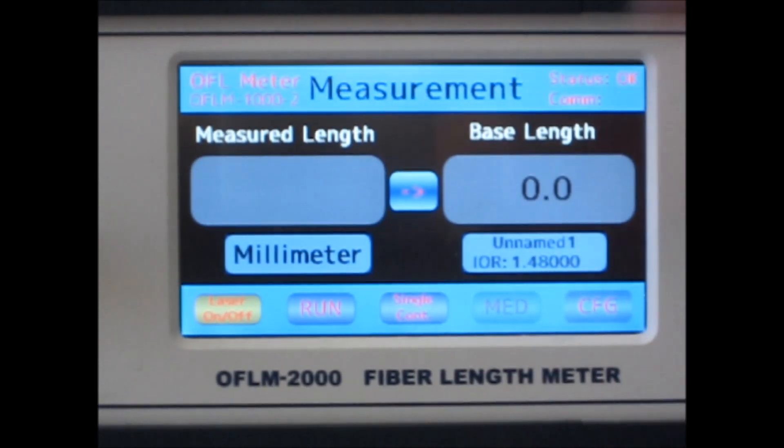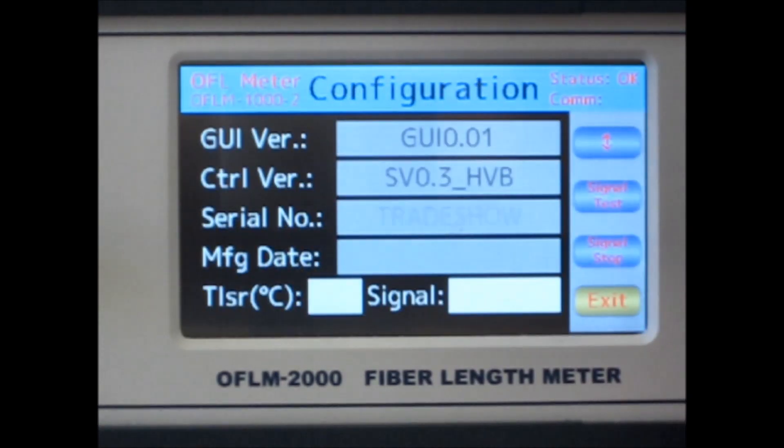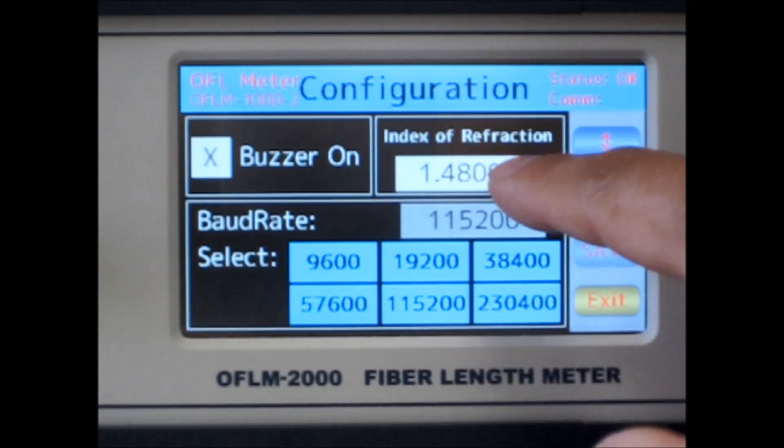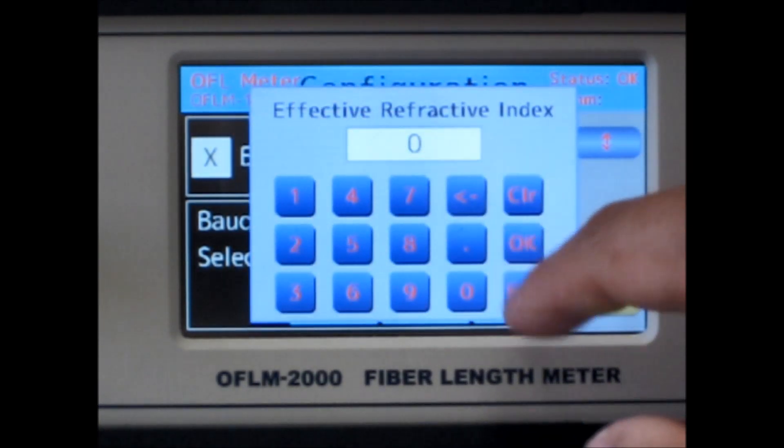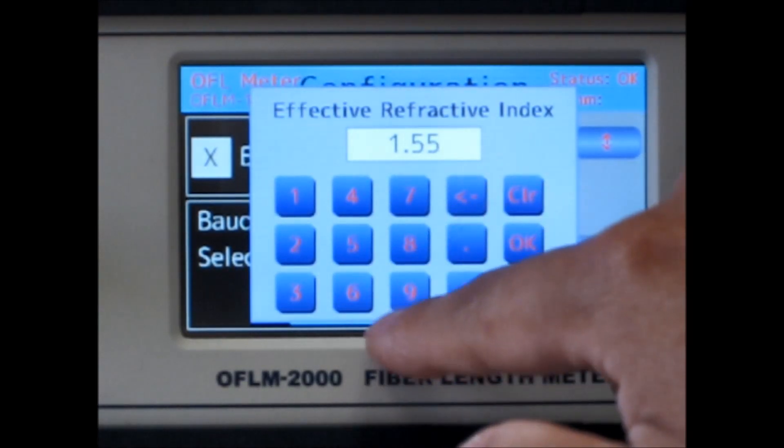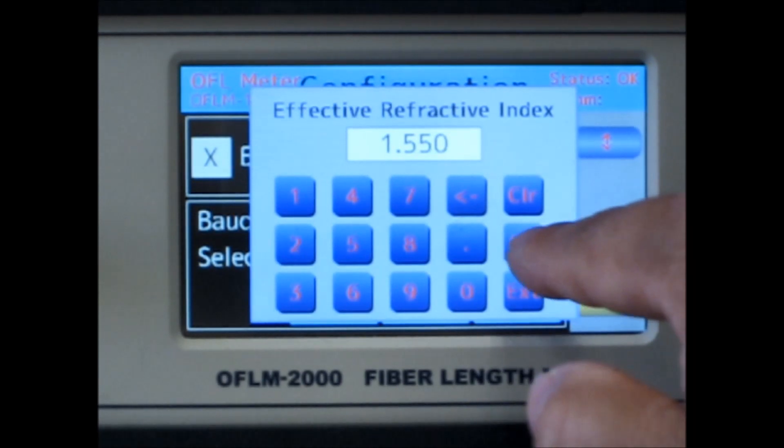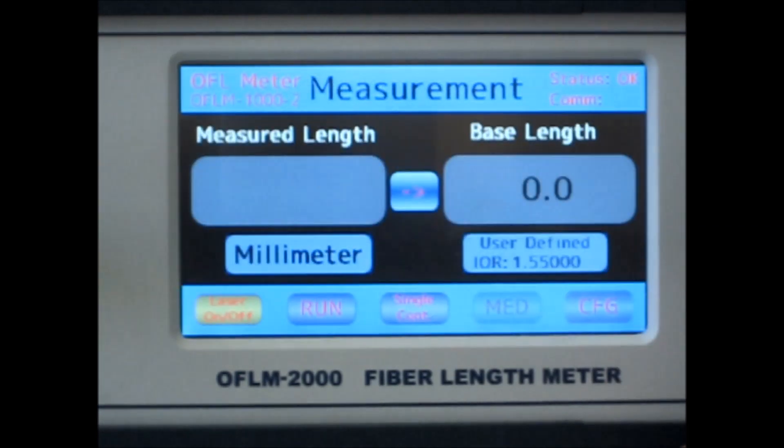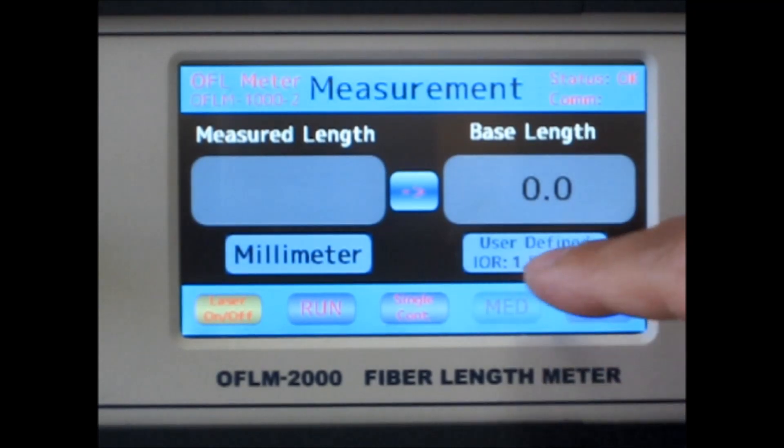You can also manually enter a specific index of refraction. To enter a custom value, push the rightmost configuration button. On the right side, push the topmost page change button. Tap on the index of refraction and you can type in a specific value. Push OK and save. Push the exit button to return back to the home screen. To change back to a standard value, just tap on the index of refraction and select the one.